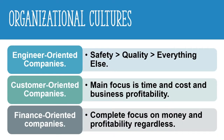Based on observation we can identify three types of organizational cultures. We have engineer-oriented cultures where safety comes first, followed by quality and then everything else. We also have customer-oriented cultures that prioritize profitability through reducing time and cost. Finally, we have finance-oriented companies that completely focus on money and profitability.